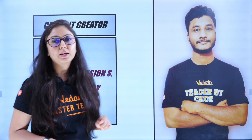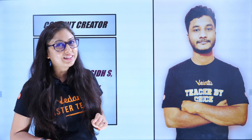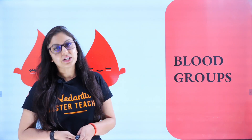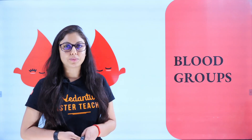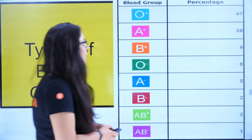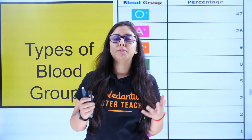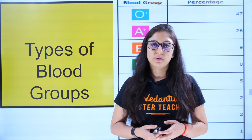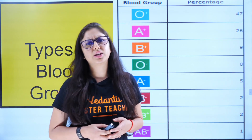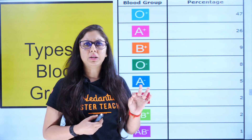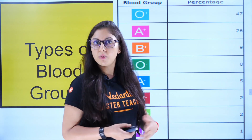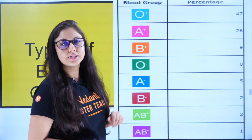Let us just start. Our today's topic is blood groups. First of all, how many types of blood groups are available? In general, you all know there are A, B, AB, and O. But there are positives and negatives also, so let us see them and their percentages.